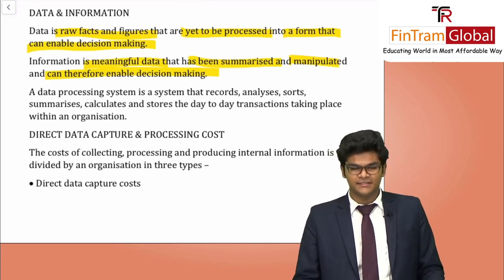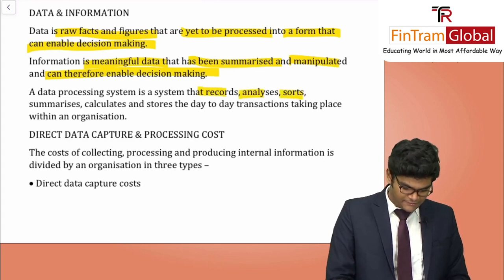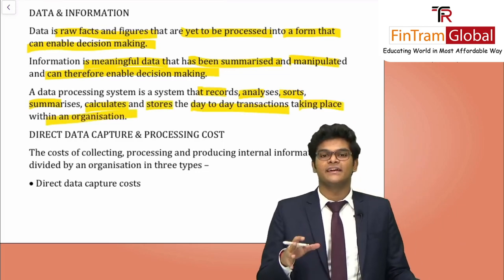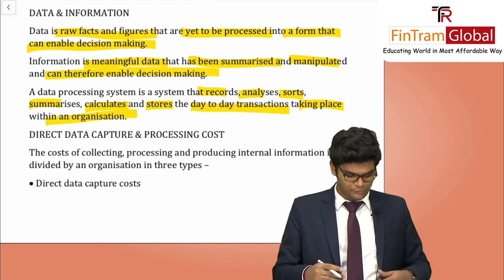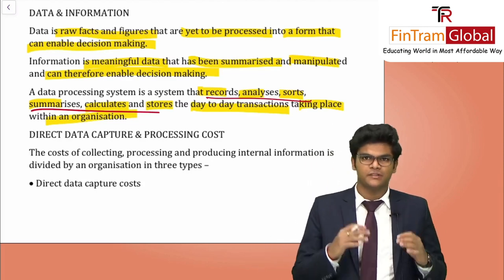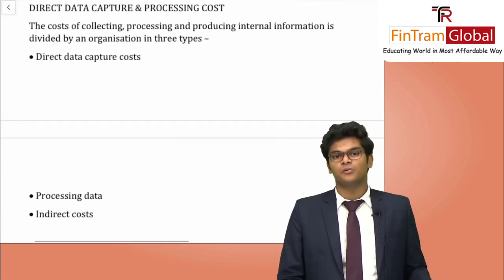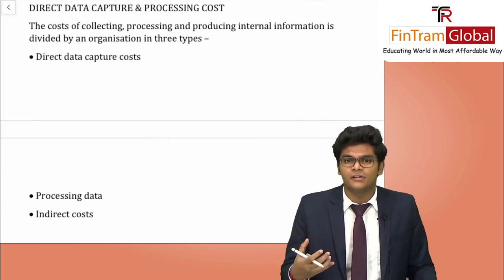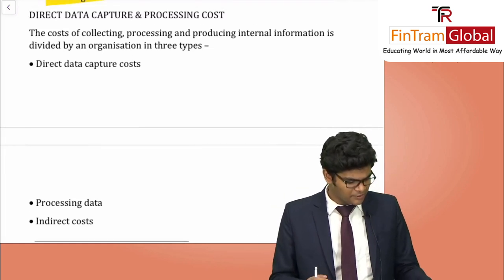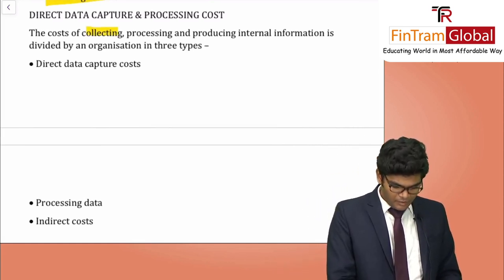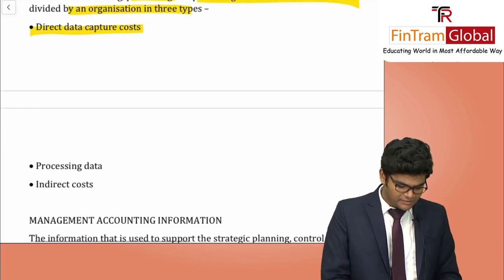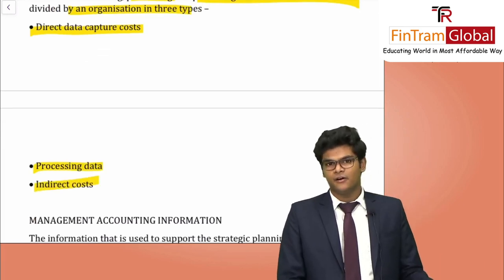A data processing system records, analyses, sorts, summarises, calculates, and stores day-to-day transactions within an organisation. There are also data capture and processing costs — divided into direct data capture costs, processing data costs, and indirect costs relating to collecting and producing internal information.